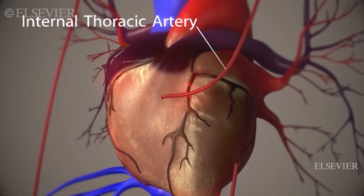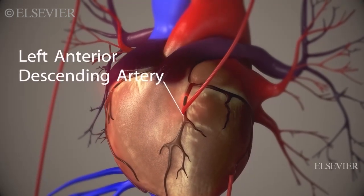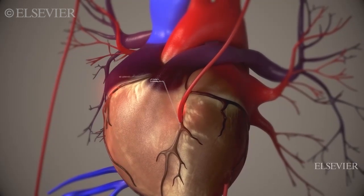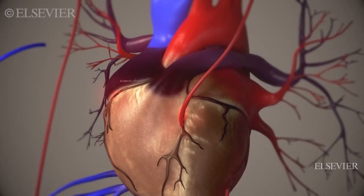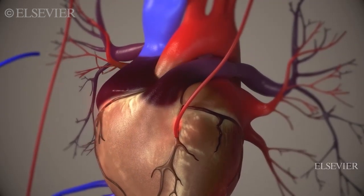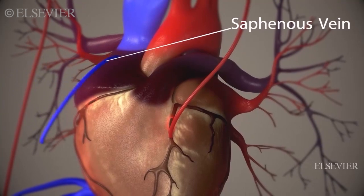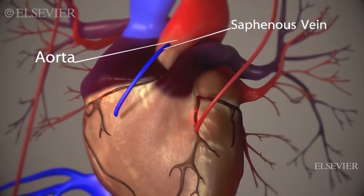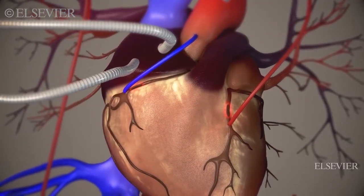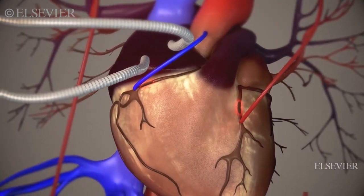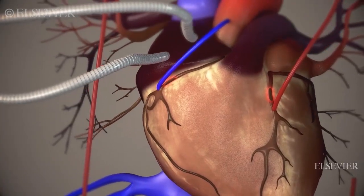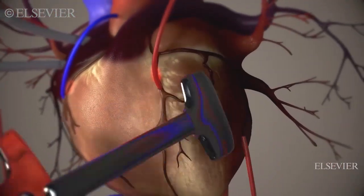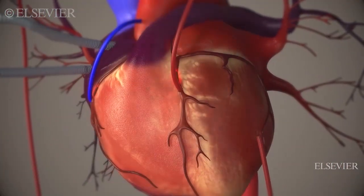Now the grafting can begin. The distal end of the internal thoracic artery is dissected and attached to the left anterior descending artery below the blockage. Then sutures are placed at one end of the saphenous vein to the aorta and the other end to the right coronary artery below the blockage.